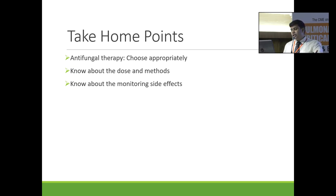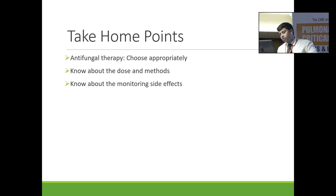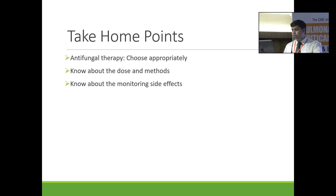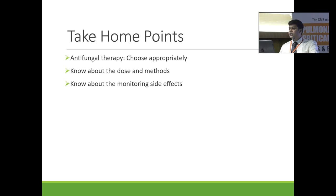Take-home points: Choose antifungal therapy appropriately — identify the organism and only then start antifungal therapy, as resistance patterns are not always easily available. Fungal diseases like Aspergillus and Mucor spread very fast and don't give you time. Know the correct dose and method of giving each formulation — Liposomal AmphoB, AmphoB lipid complex, and plain AmphoB are all given differently. Also know about side effects: AmphoB is associated with so many side effects that you may end up managing its complications rather than the original disease.